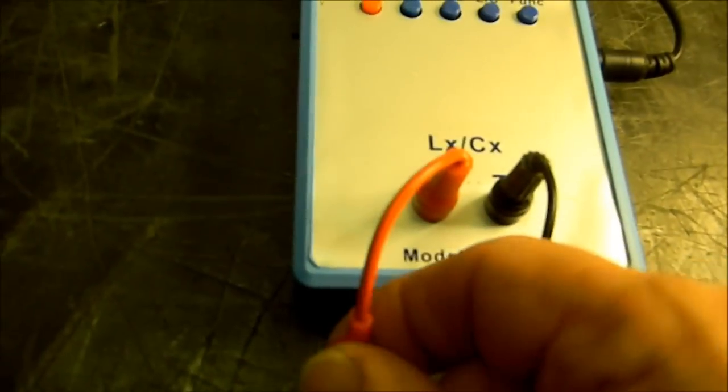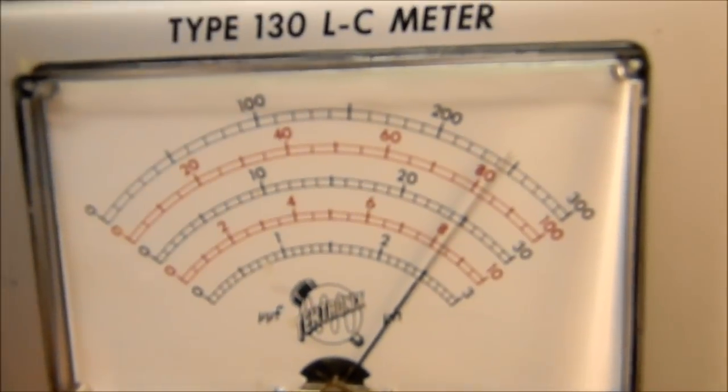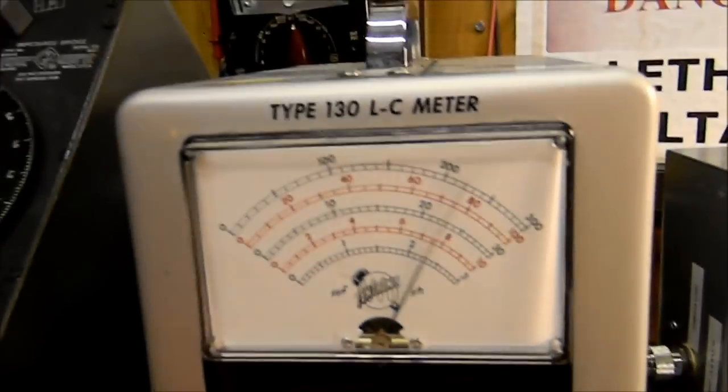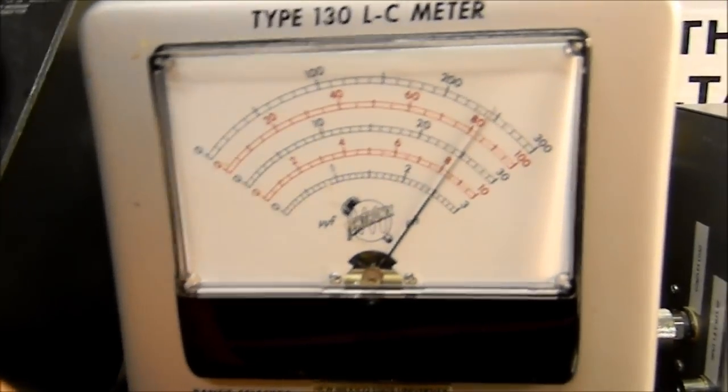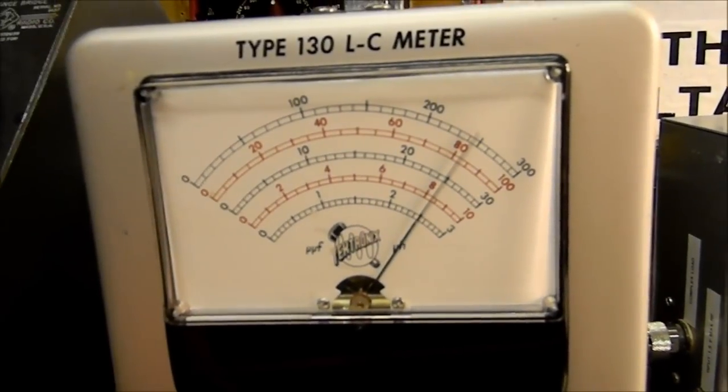Then we can take it off of there, and we'll put it over here on this Tektronix meter. See what it says. And it says that it's... I hope this thing will focus just right. Without a focus, it's pretty aggravating. It says it's just a hair less than 25. So we'll call it 25.